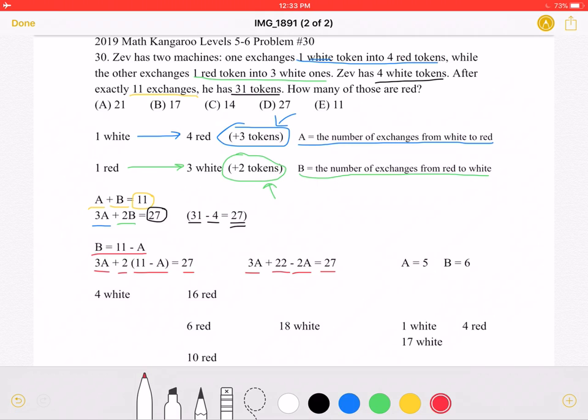And if we combine that, we will get that A is equal to 5. And using that information, we can go back over here where we wrote that B is equal to 11 minus A. So B must be equal to 6 since 6 plus 5 is equal to 11.